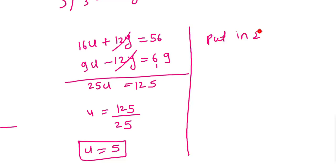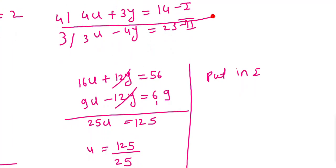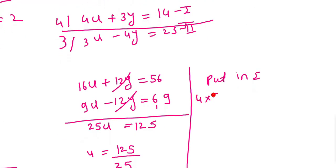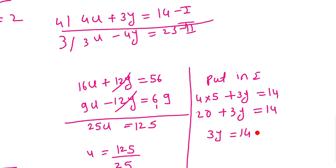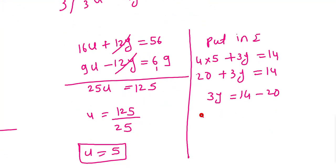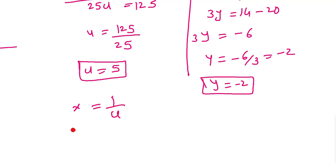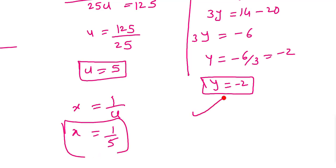Putting u = 5 into equation 1: 4×5 + 3y = 14, so 20 + 3y = 14, giving 3y = -6, so y = -2. Since u = 1/x and u = 5, we get x = 1/5. So x = 1/5 and y = -2.